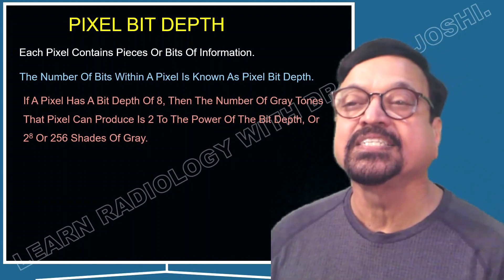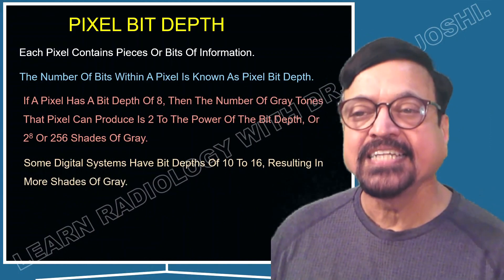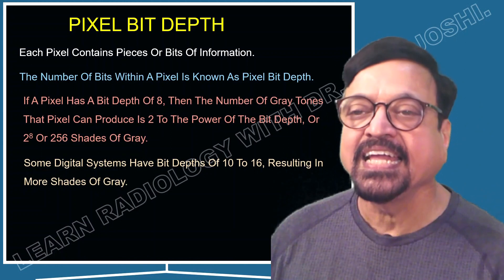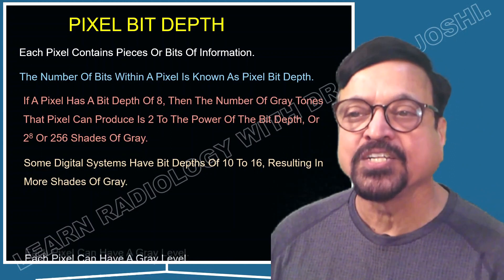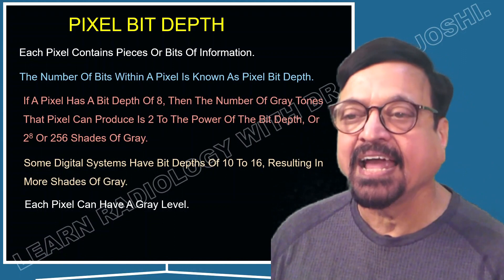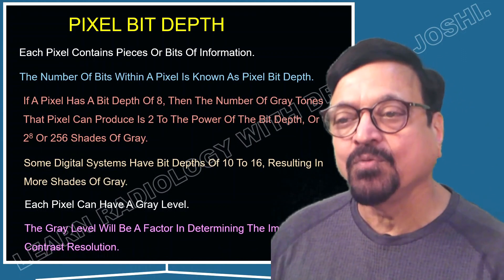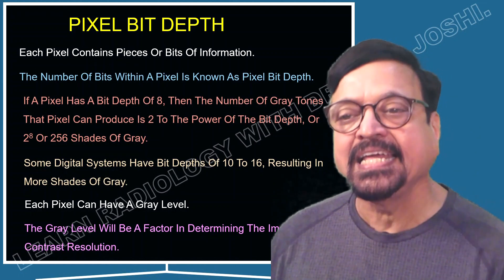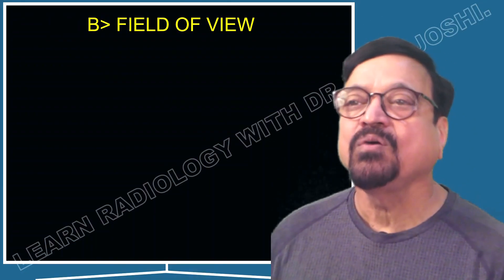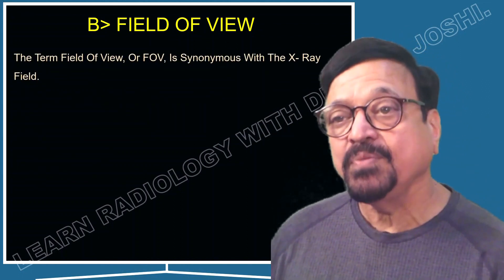That is the routine setting on standard machines. Digital systems with a bit depth of 10 to 16 result in more shades of gray, so better resolution machines are also available. Each pixel can have a gray level, and that gray level is a factor in determining image contrast resolution.